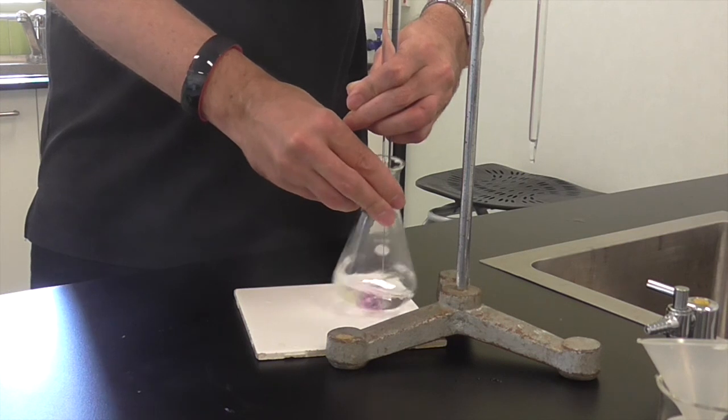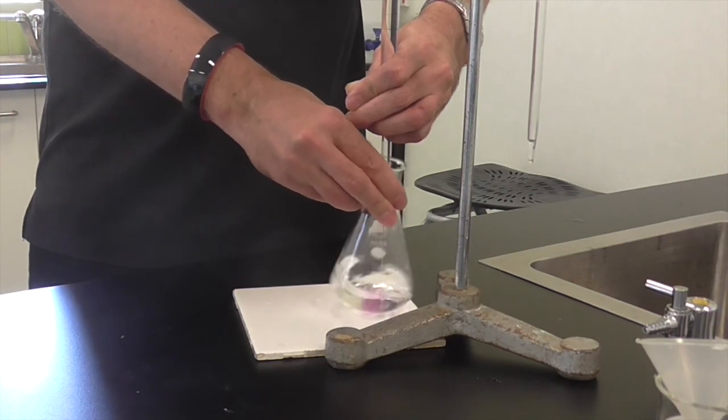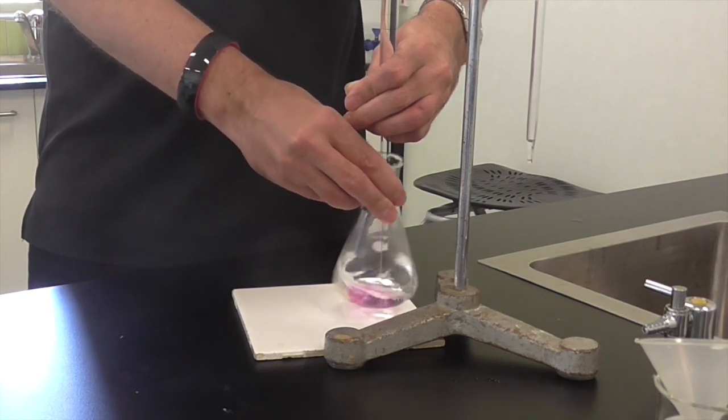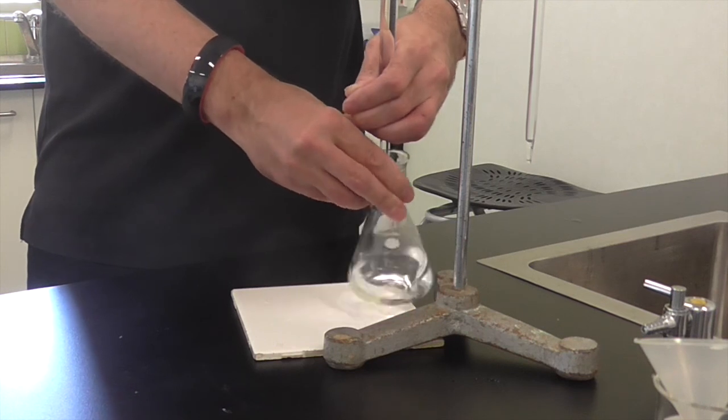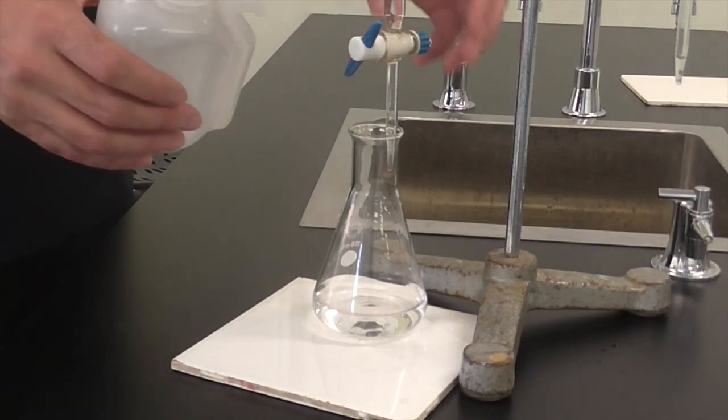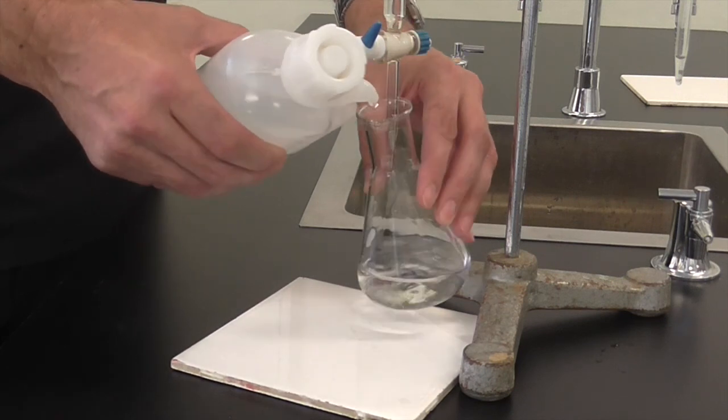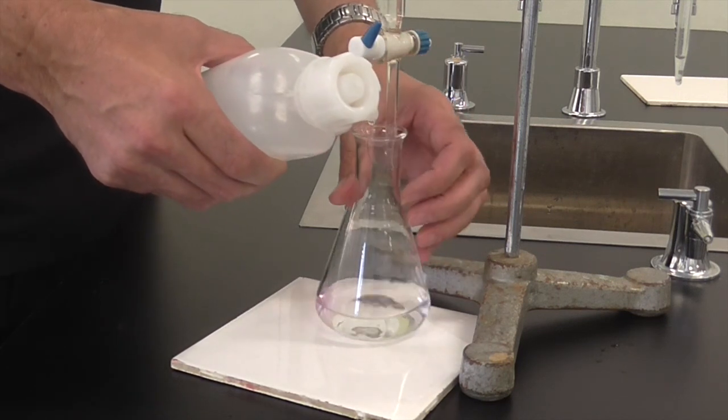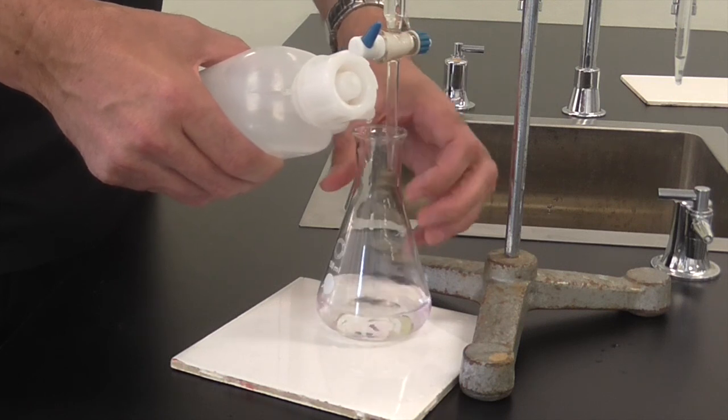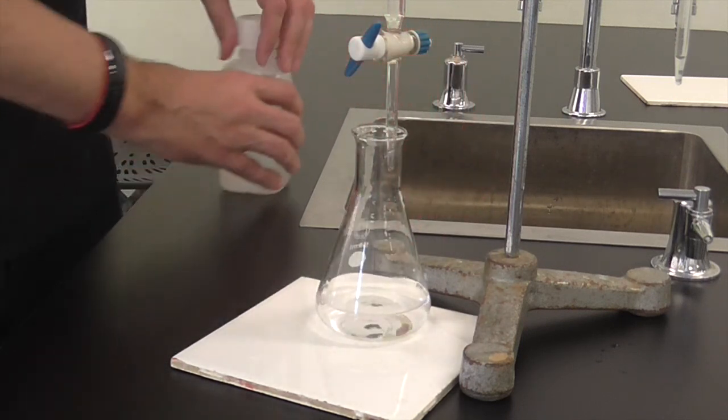Keep adding and swirling, adding and swirling, looking for the pink colour to start to hang around a bit longer before it disappears. As you get closer and closer to the end point, it's a good idea to rinse off the inside of the conical flask and the end of the burette to make sure that all the solution added from the burette makes its way into the mixture down the bottom.